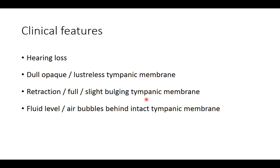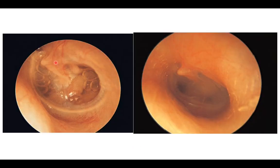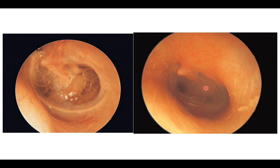Pain is not a hallmark of serous otitis media. In addition to variations in tympanic membrane position, there can also be a fluid level or multiple air bubbles visible behind an intact tympanic membrane — this is a classical feature of serous otitis media, though not seen in all cases. It can also present as retraction of the tympanic membrane with amber coloration and fluid accumulation behind an intact TM but without air bubbles.